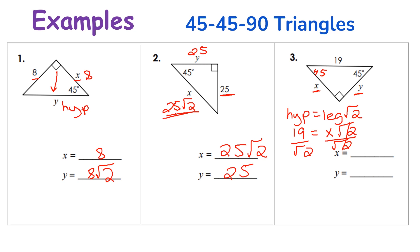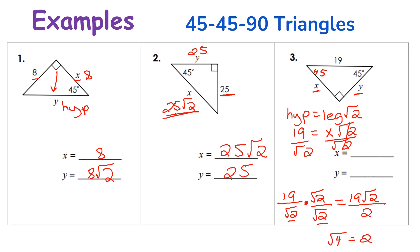I cannot leave that radical in the denominator, so I have to use a method called rationalizing the denominator — multiplying the numerator and denominator by whatever is in the denominator, which is the square root of two. So 19 over square root of two times square root of two over square root of two gives us 19 times the square root of two over the square root of four, which is just two. So both x and y equal 19 times the square root of two over two.